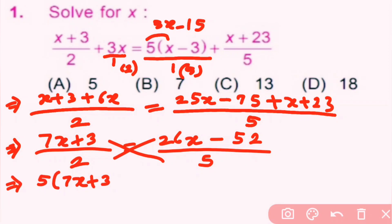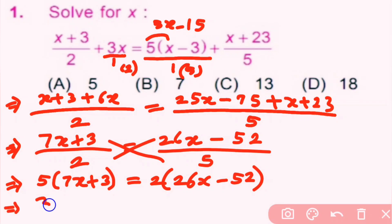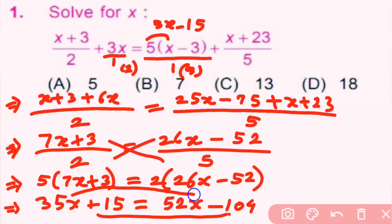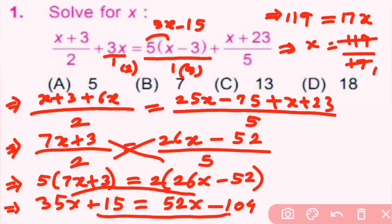Now we cross multiply: 5 into 7x plus 3 is equal to 2 into 26x minus 52. So 35x plus 15 equals 52x minus 104. Taking 104 to this side and 35x to the other side: 15 plus 104 is 119, and 52x minus 35x is 17x. So x equals 119 by 17, and 17 sevens are 119, so x equals 7. Answer b is correct.